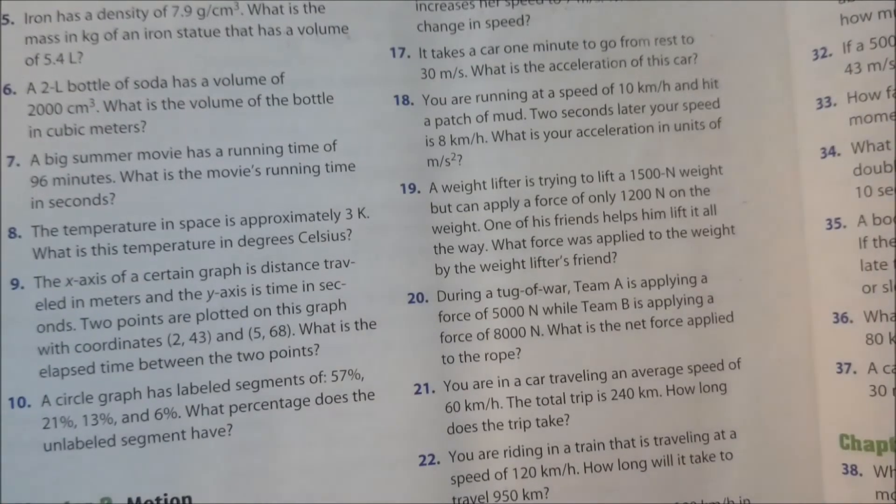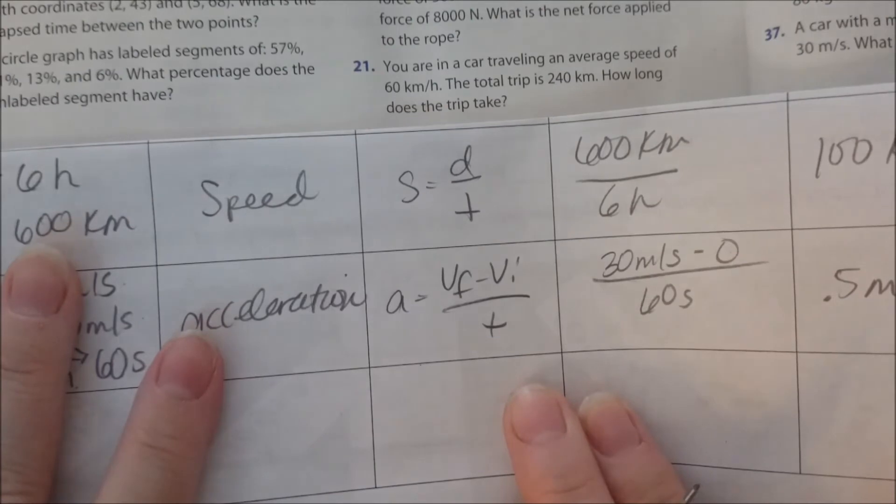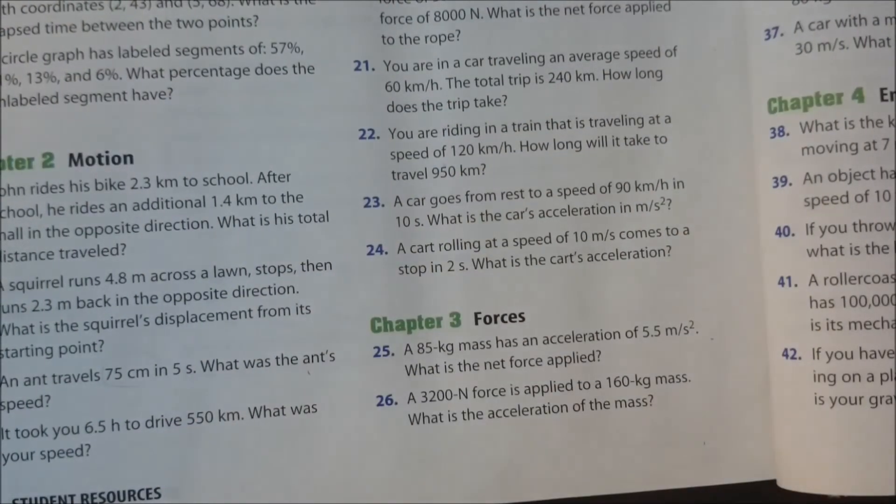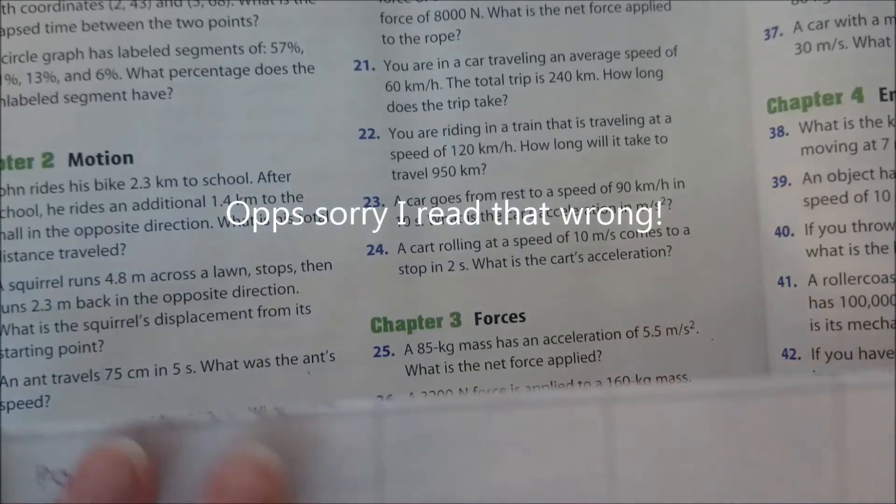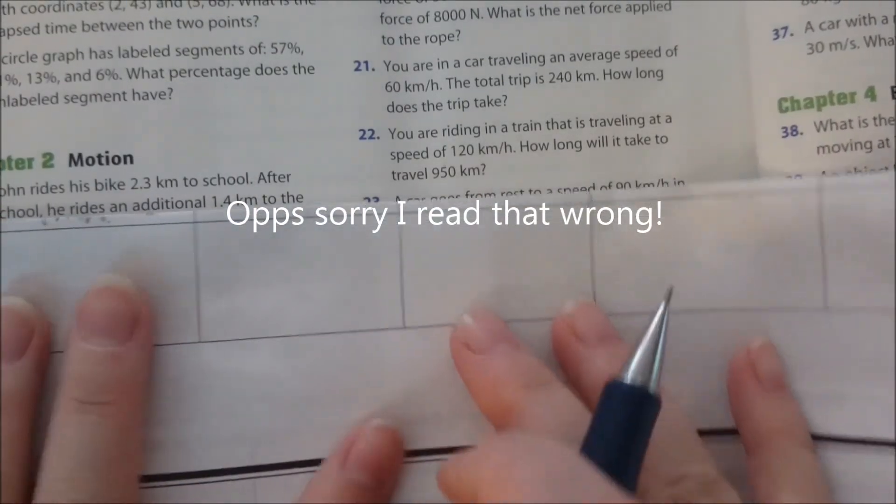Last one, number 21. So 21 says you are in a car traveling an average speed of 60 kilometers per hour. How long will it take to travel 950 kilometers?